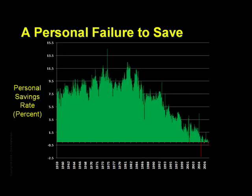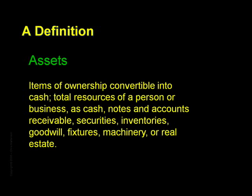After all, does it really matter if you have no savings and a million dollars of debt if you have assets worth $10 million? Well, that's a great point, so we're going to take a look at assets here. One definition is: items of ownership convertible into cash — total resources of a person or business, such as cash, notes and accounts receivable, securities, inventories, goodwill, fixtures, machinery, or real estate.